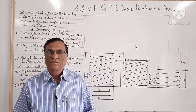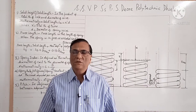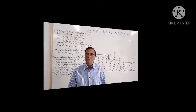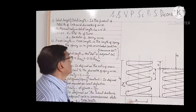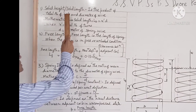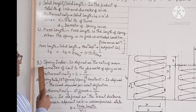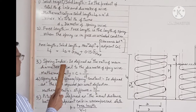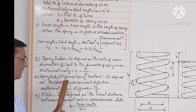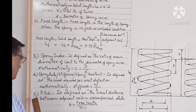Good morning students. In this session we will learn different terms related to helical compression spring: solid height or solid length, free length, spring index, spring rate or stiffness or spring constant, and pitch.